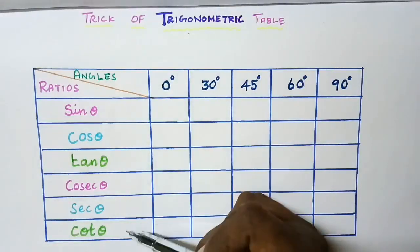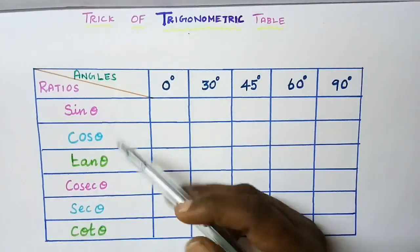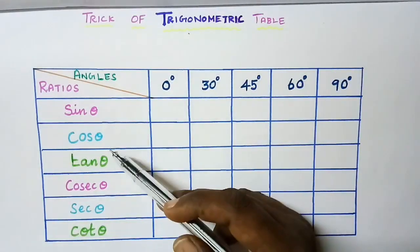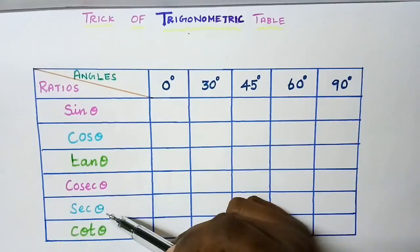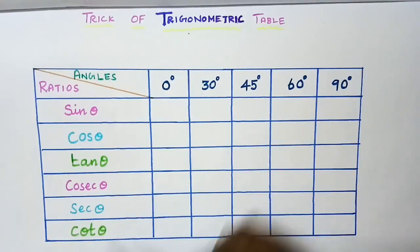The ratios are written vertically: sin theta, cos theta, tan theta, cosecant theta, secant theta, and cot theta.